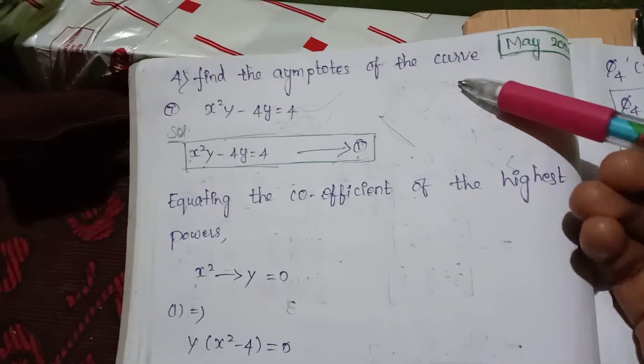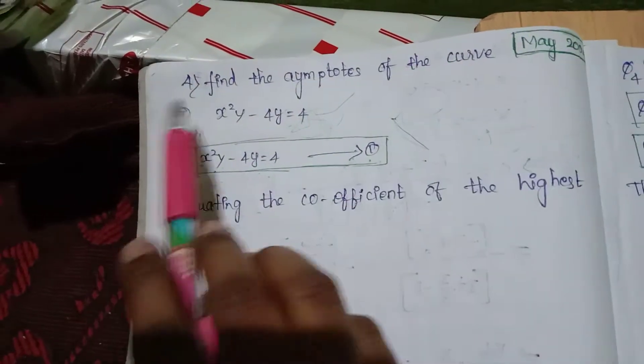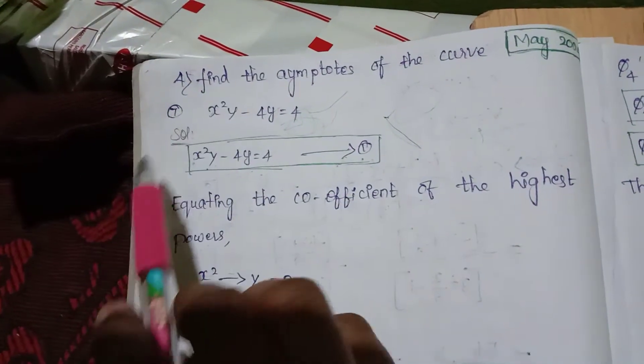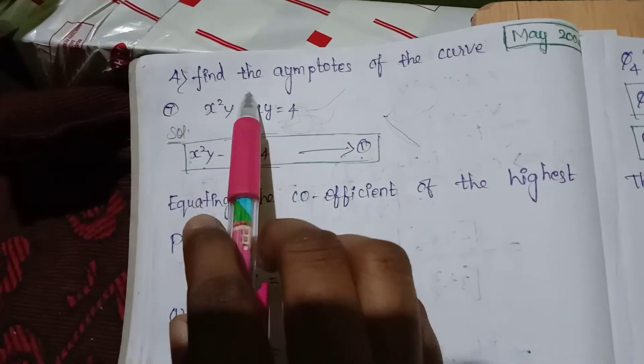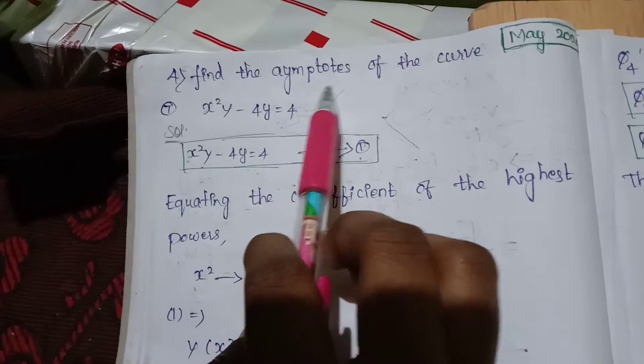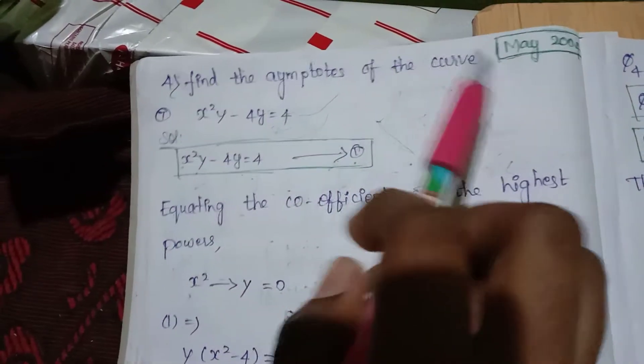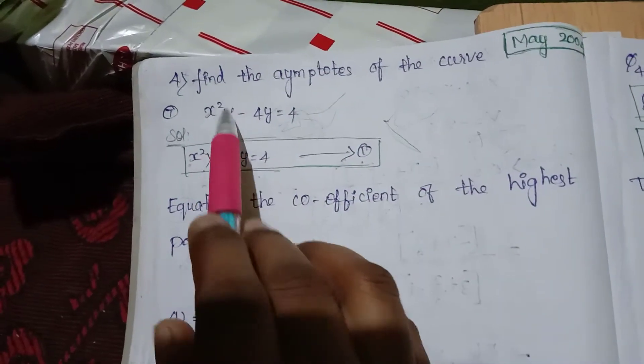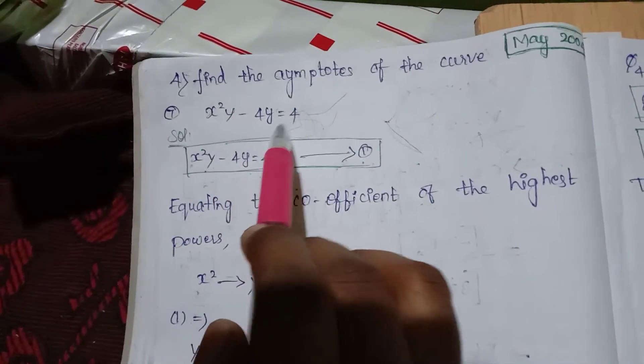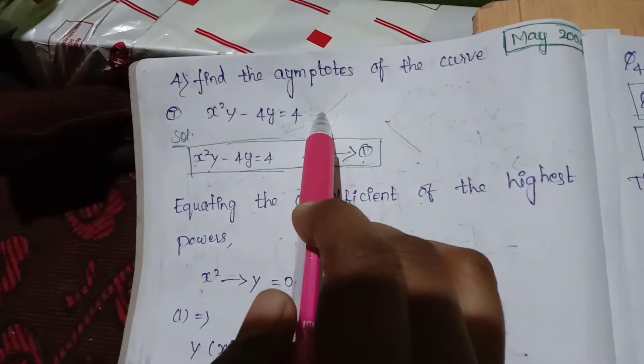Hi friends, now we are going to find the asymptotes of the curve x²y - 4y is equal to 4.